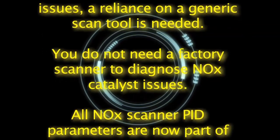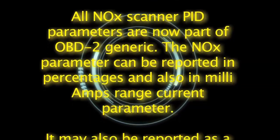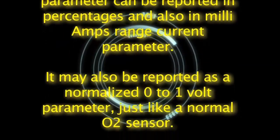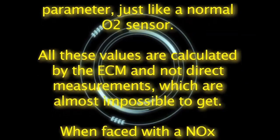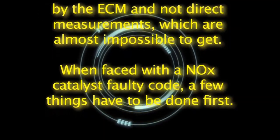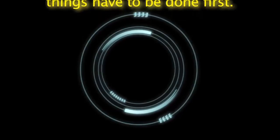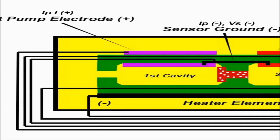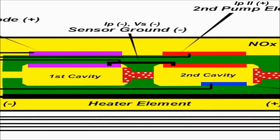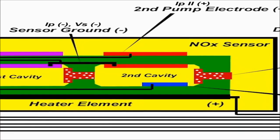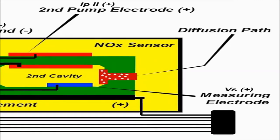The NOx parameter can be reported in percentages and also in milliamp range current parameter. It may also be reported as a normalized 0 to 1 volt parameter, just like a normal O2 sensor. All these values are calculated by the ECM and not direct measurements. When faced with a NOx catalyst faulty code, a few things have to be done first: query the ECM for any NOx related codes. In order to weed out possible erroneous codes, you need to make sure the NOx sensor is fine. You must do a NOx sensor response test to double check its operation — you may still have a faulty NOx sensor that the ECM hasn't really picked up on yet.